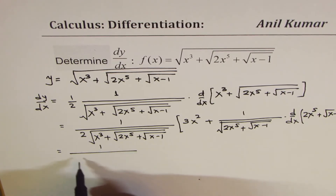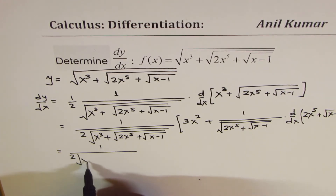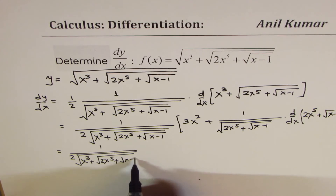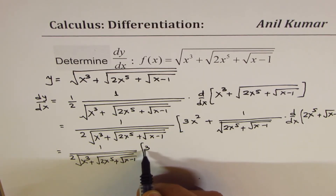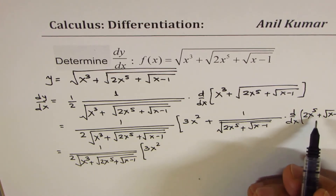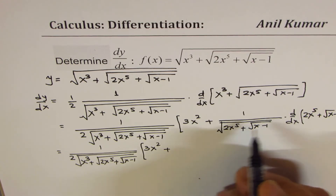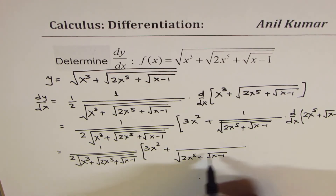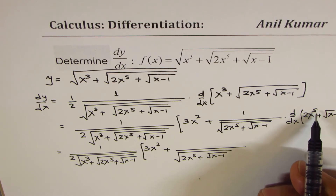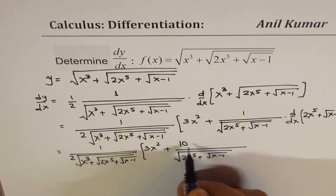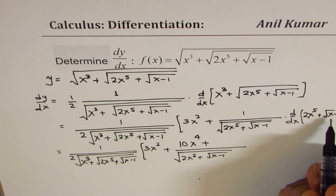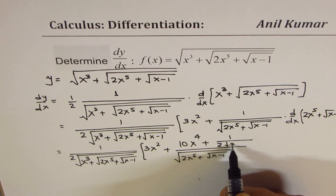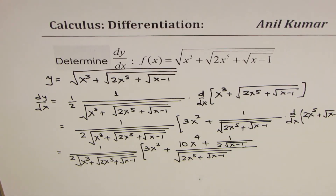We can now write this as: 1 over 2√(x³ + √(2x⁵ + √(x − 1))) times 3x², plus the term with denominator √(2x⁵ + √(x − 1)). The derivative of 2x⁵ is 10x⁴, and the derivative of √(x − 1) is 1 over 2√(x − 1).